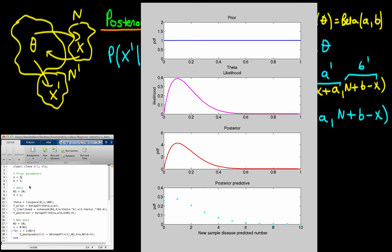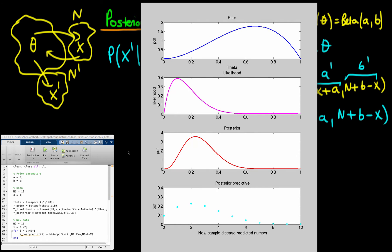If I change the prior to weight towards a high probability of an individual having the disease before taking either sample, the prior shifts and is now skewed towards the right, while the likelihood remains the same. The posterior, being a mixture of these two, sits partly between the likelihood and the prior — more weighted towards the likelihood here because we have a reasonably large sample size of 10. The posterior predictive distribution still exactly mirrors the posterior distribution.